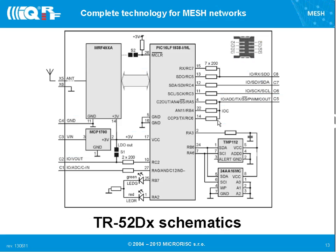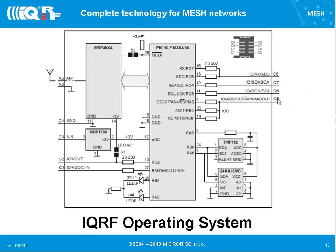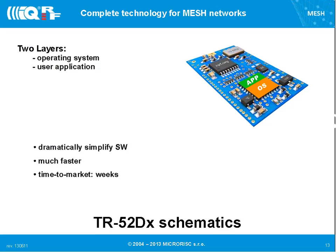The more detailed schematics show the difference between 52D and 54: on 52D you have six pins usable for different things including ADC and PWM, while the 54 has many more pins available. It depends on your application which module you pick.